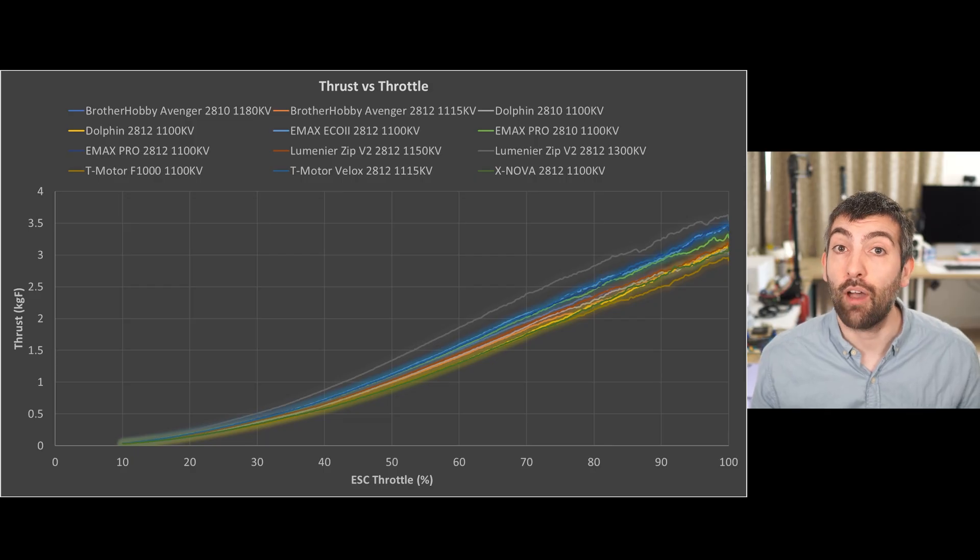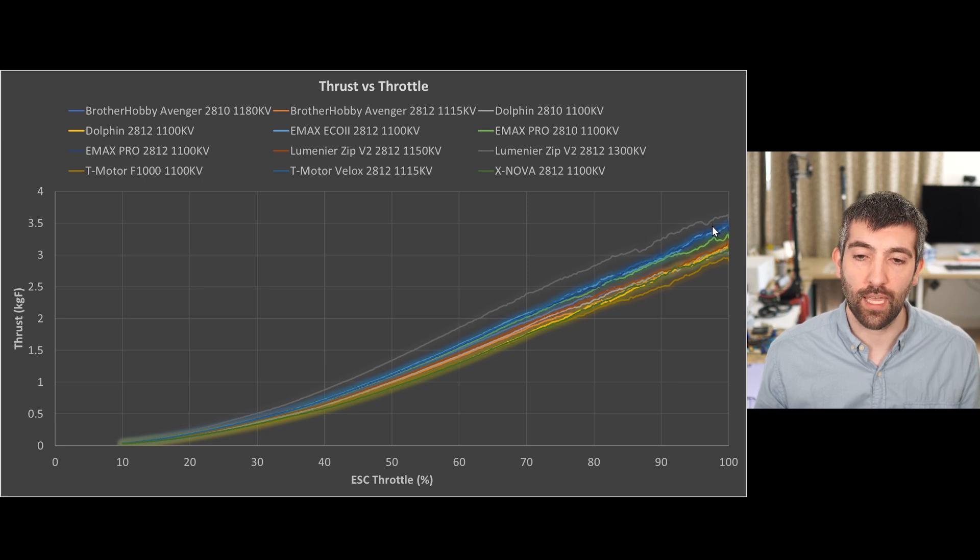They start to run out of mechanical torque and start to lose efficiency at high throttle settings, and that means the advantage they have over the lower kV motor starts to fall away. Although here we can see the 1300 kV still maintains an advantage all the way to 100% throttle, so it's only slightly too high in terms of kV. In terms of the other motors, we see a pretty big spread so let's have a look at the maximum thrust.